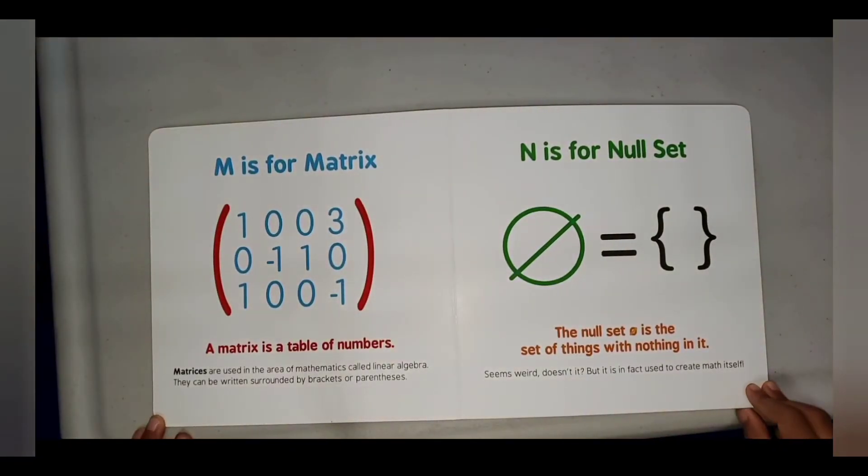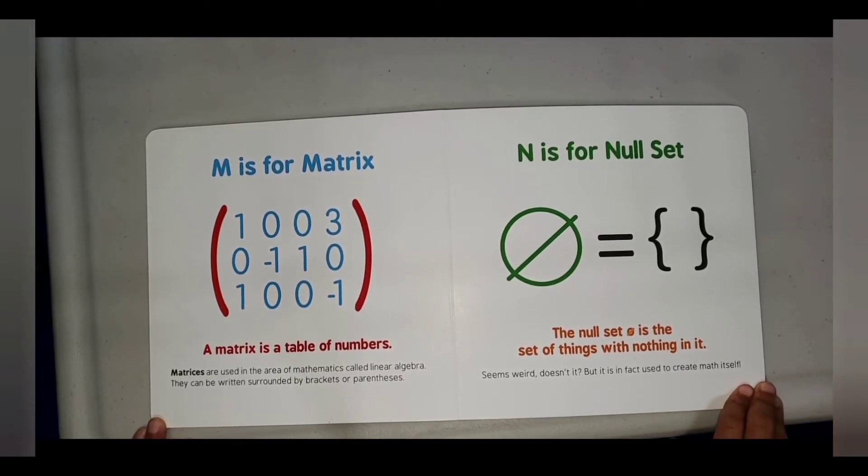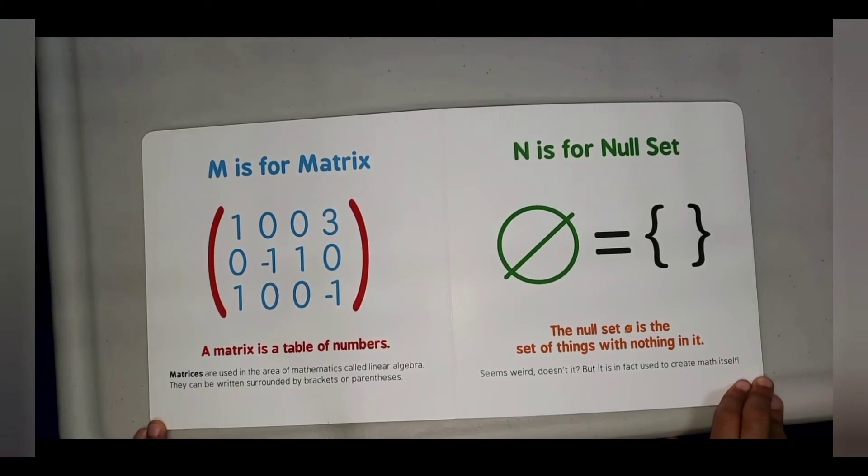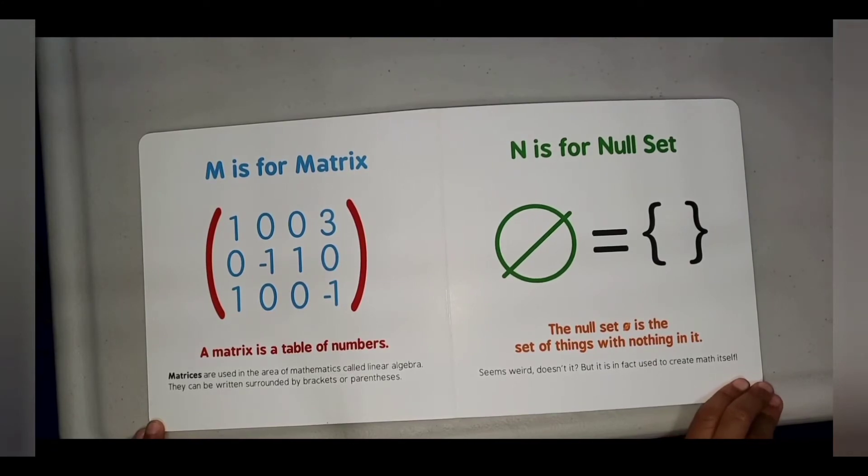M is for Matrix. A matrix is a table of numbers. Matrices are used in the area of mathematics called linear algebra. They can be written surrounded by brackets or parentheses.